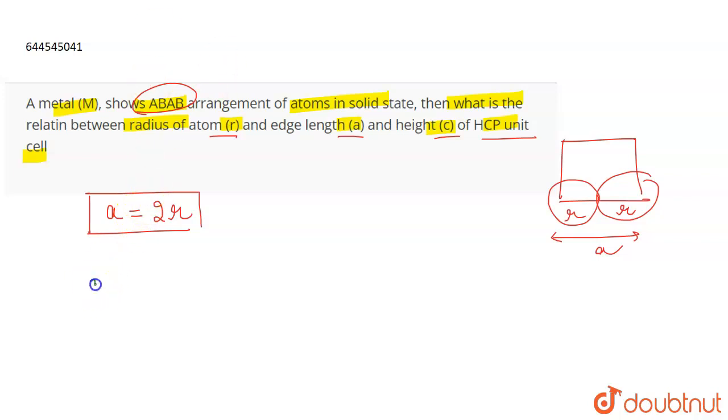Now if you talk about the relationship of height and the edge length, then it is given as under root 2 by 3 into 2A. So this is the relationship between the height of the unit cell and the edge length.